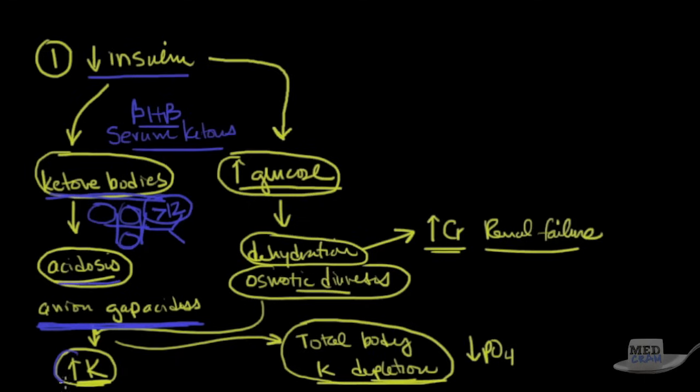You'll get the acidosis as mentioned. Sometimes you'll see a high potassium. Usually you'll see a high potassium. But again, the total body potassium is depleted because a lot of the body's potassium has been depleted outside of the cells and into the serum.